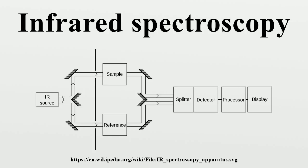For a given sample which may be solid, liquid, or gaseous, the method or technique of infrared spectroscopy uses an instrument called an infrared spectrometer to produce an infrared spectrum. A basic IR spectrum is essentially a graph of infrared light absorbance on the vertical axis versus frequency or wavelength on the horizontal axis.